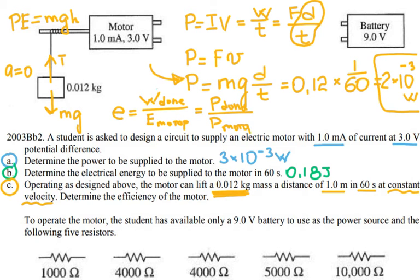So I have 2 times 10 to the negative 3 divided by 3 times 10 to the negative 3, which gives me 0.67, or 67%.